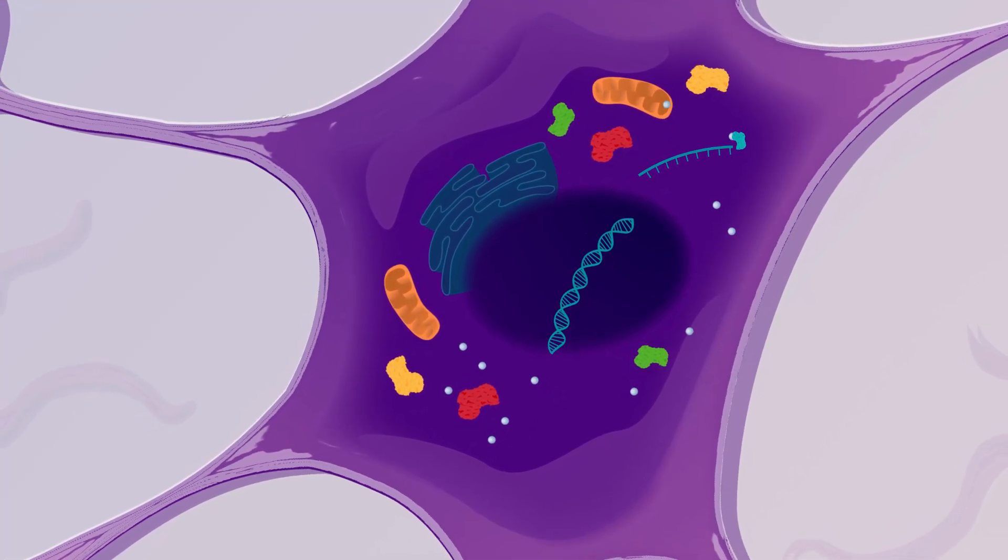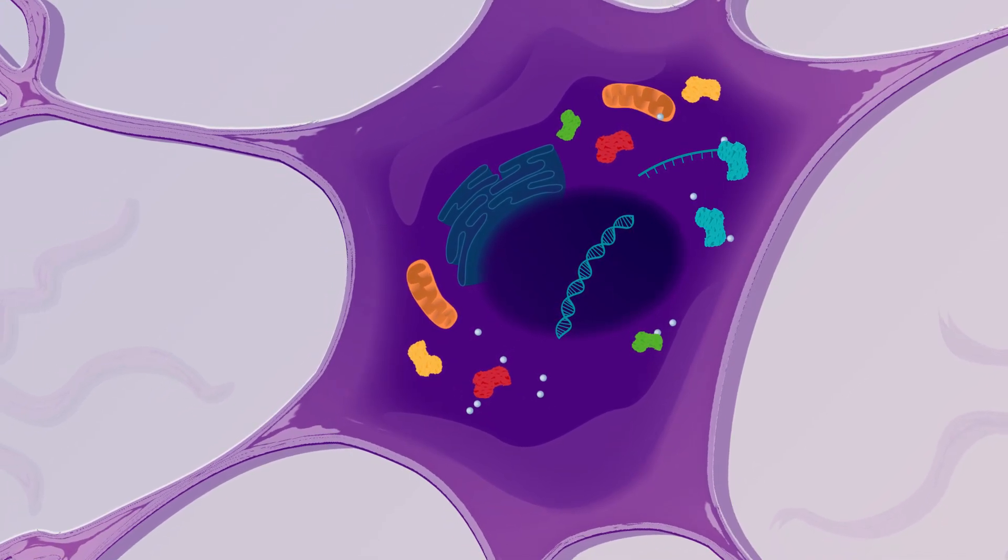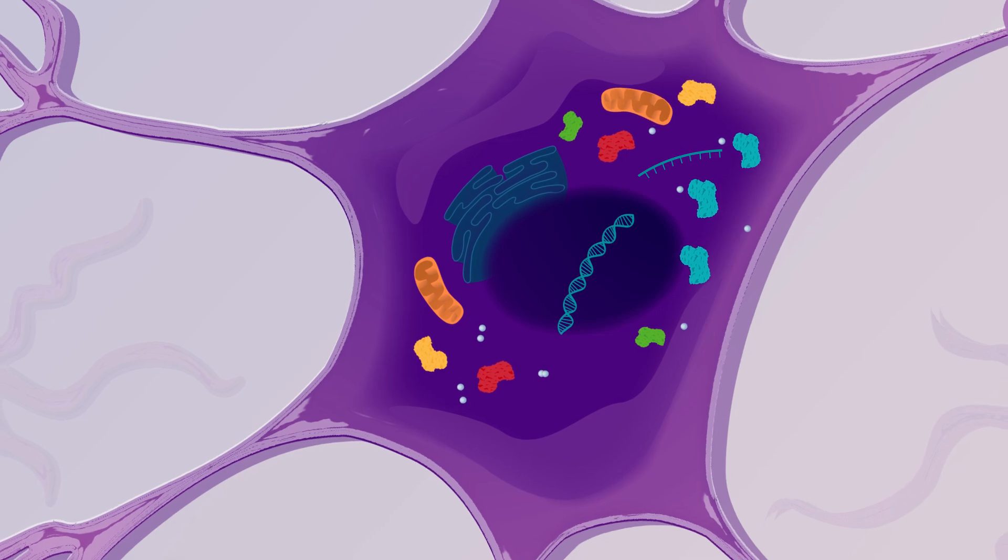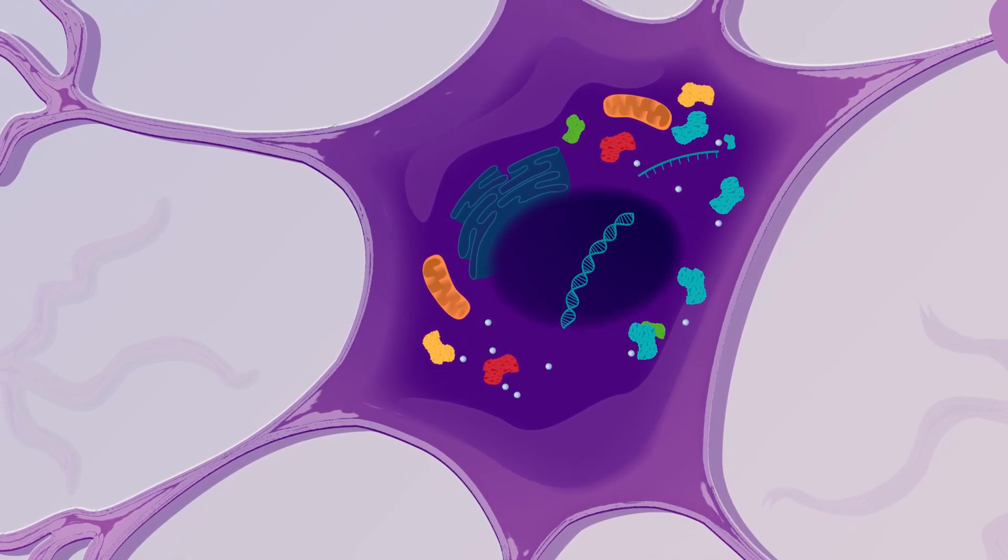Once the healthy gene is inside the cell, it can create normal functioning SMN protein. The goal is the good gene will produce enough good protein and the cell will function properly.